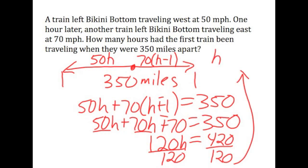We divide both sides by 120, and I've run out of room, but I'll write it up here at the top. H equals 3.5, and we know that it's hours. That is the answer to the question. The variable that we defined is the hours the first train had been traveling, which is what the question was. The first train had been traveling 3.5 hours.